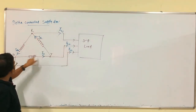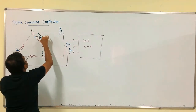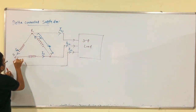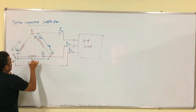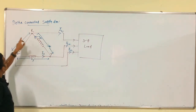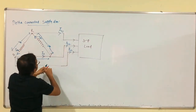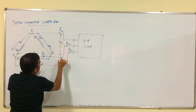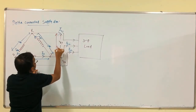So I_R, I_Y, I_B are the phase currents. From here to here, this is phase voltage V_R. This is phase voltage V_Y, and this is phase voltage V_B. The line voltages are V_RY, V_YB, and V_BR.